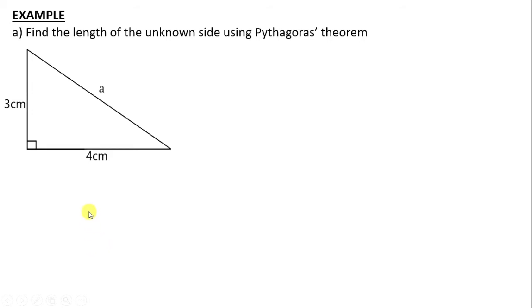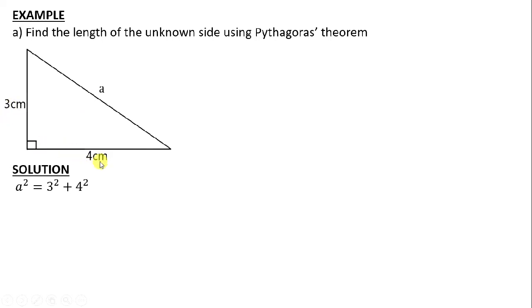When you are asked to find the unknown side, you are supposed to identify whether it is the hypotenuse or the adjacent side. We state the Pythagoras theorem: a squared is equals to 3 squared plus 4 squared. So when we square the longest side, the hypotenuse a, it should be equals to 3 squared plus 4 squared, which is 3 times 3 plus 4 times 4. So we are saying a squared is equals to 9 plus 16.